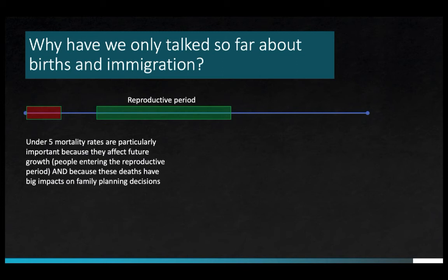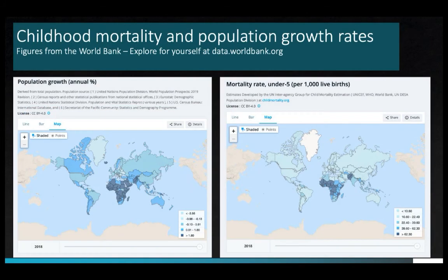However, when children die young it can have a profound effect on both population growth rates and decisions about family size. Imagine having a child in a place where there is a high likelihood they would not survive past age five. Would you consider having more children? There are very strong correlations between under-5 mortality and overall rates of population growth. Looking at maps of population growth and under-5 mortality, in places where children are less likely to make it past age five, population growth rates tend to be the highest — and that's counterintuitive.